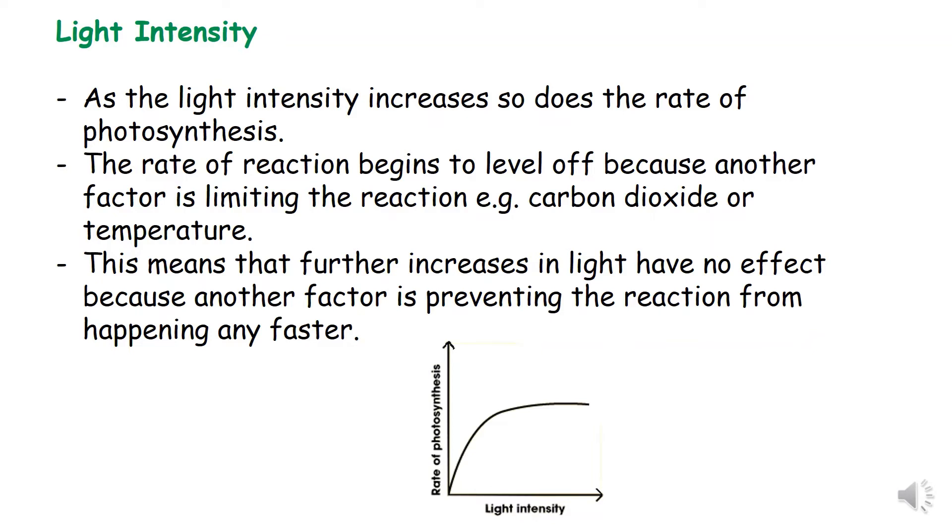The first factor we are going to look at is light intensity. As light intensity increases, the rate of photosynthesis also increases. However, the rate of photosynthesis stops increasing which is shown by the graph levelling off. This is because there is a limiting factor affecting the rate of photosynthesis which can be temperature, carbon dioxide concentration, or amount of chlorophyll in the leaf.